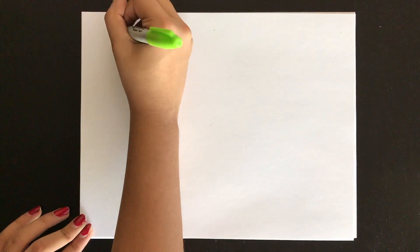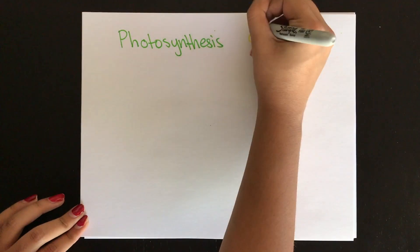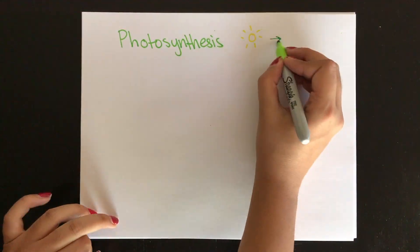Hi, my name is Naharika Kakkar and today I'm going to be talking about photosynthesis, plant structure, and plant reproduction. Photosynthesis uses solar energy to produce carbohydrates.